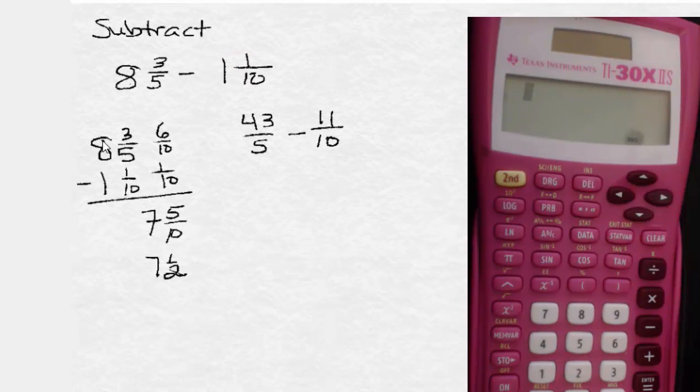And writing equivalent fractions, we have to multiply both the numerator and denominator by 2, giving us 86 tenths minus 11 tenths. This is going to give us 75 tenths,